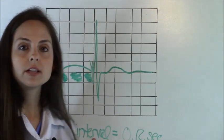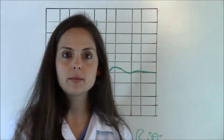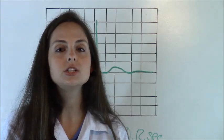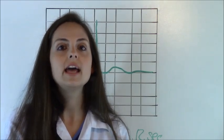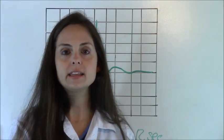And this PR interval is normal. Because remember, any PR interval between 0.12 to 0.20 is normal. Anything over that, you may have a heart block. So that is how you measure the PR interval.